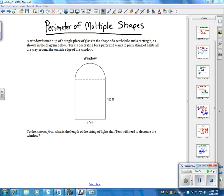We're going to look at a perimeter question where we have a rectangle and a semicircle. It says that a girl is decorating for a party and she puts a string of lights all around the outside edge.